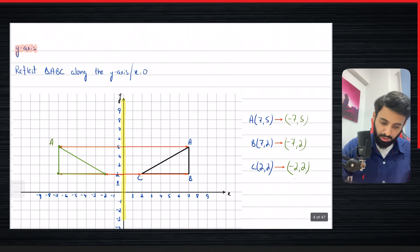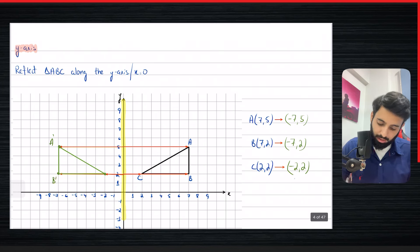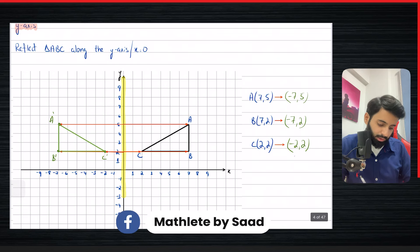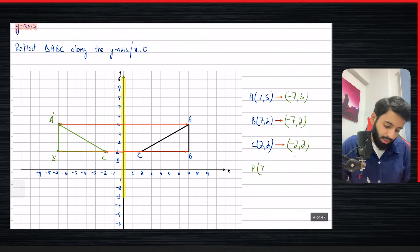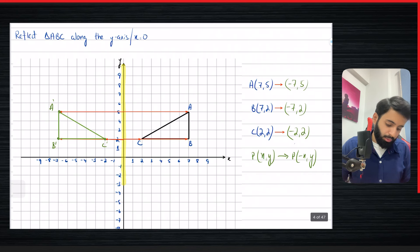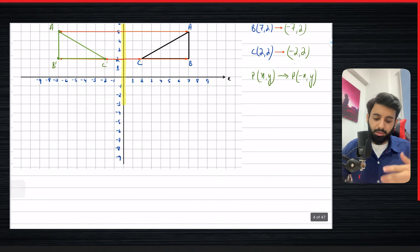Let's label the coordinates A prime, B prime, C prime. Just to distinguish between object and image, we put a small apostrophe — we call it 'a prime.' Studying the pattern, you can see that while the y coordinate remains the same, the sign of the x coordinate changes. So if you have a point P x comma y, after reflecting along the y-axis it becomes minus x comma y.